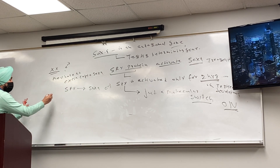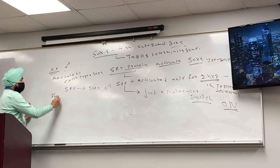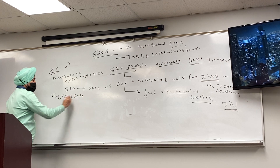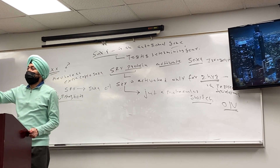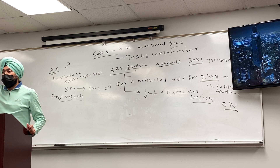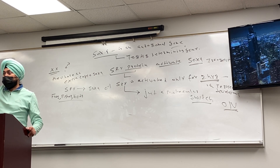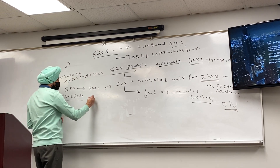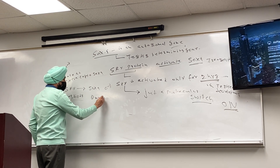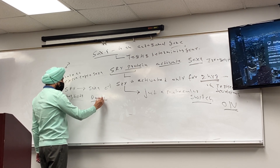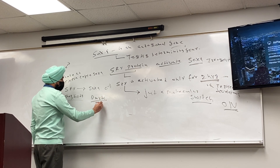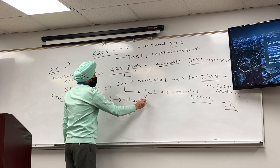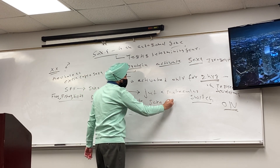Whereas in frogs, fishes, and birds — remember, in birds they don't have a Y chromosome like us, they have ZZ and ZW, where ZZ is male. In that case, there is a transcription factor called DMRT1, and this transcription factor activates SOX9 and you get male.